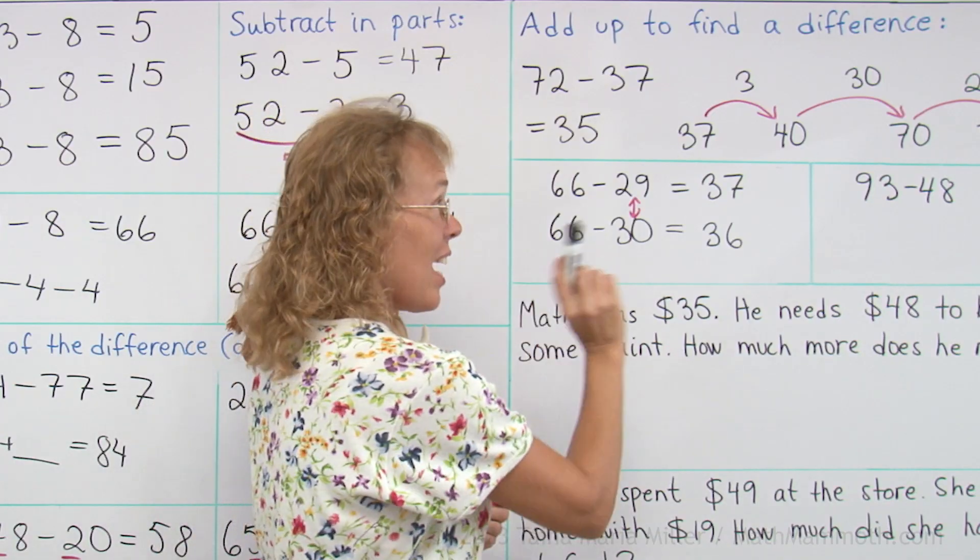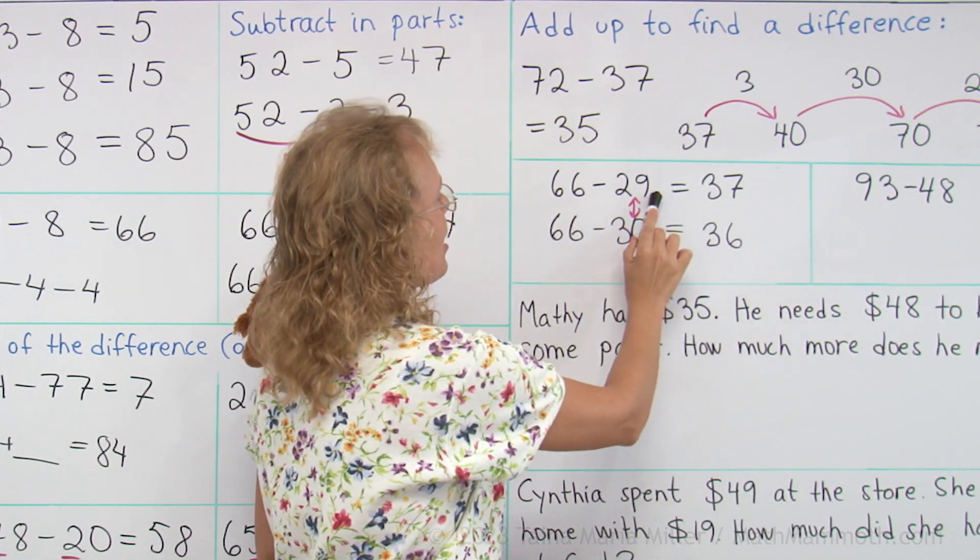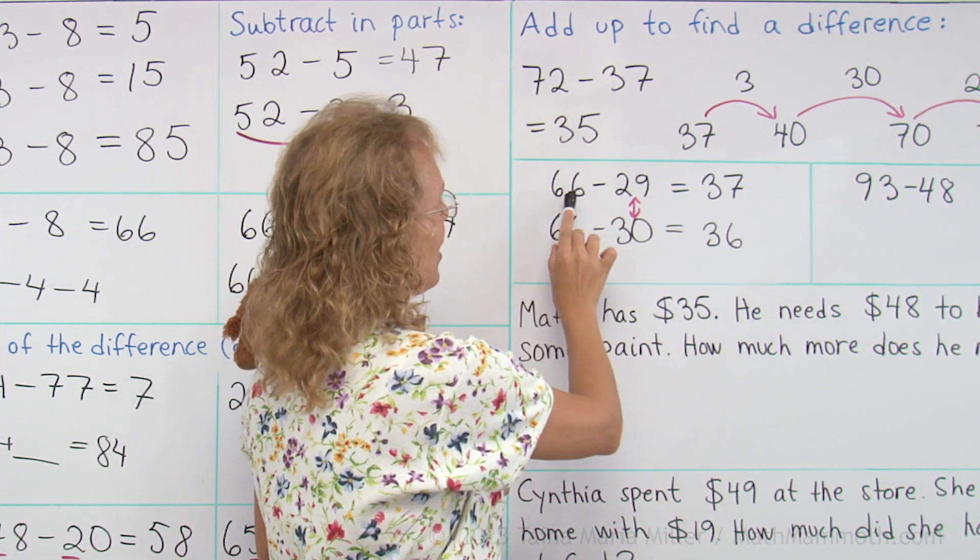Again you could add to check your answer. 37 plus 29 and it is 66.